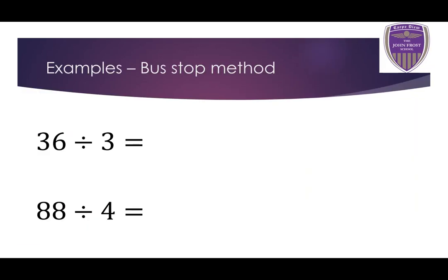So, first, some easy examples. We've got a question: 36 divided by 3. There are two numbers in this question. The first number we call the dividend — that's the number that is being divided. And the second number is the divisor, and that is what the dividend is being divided by.